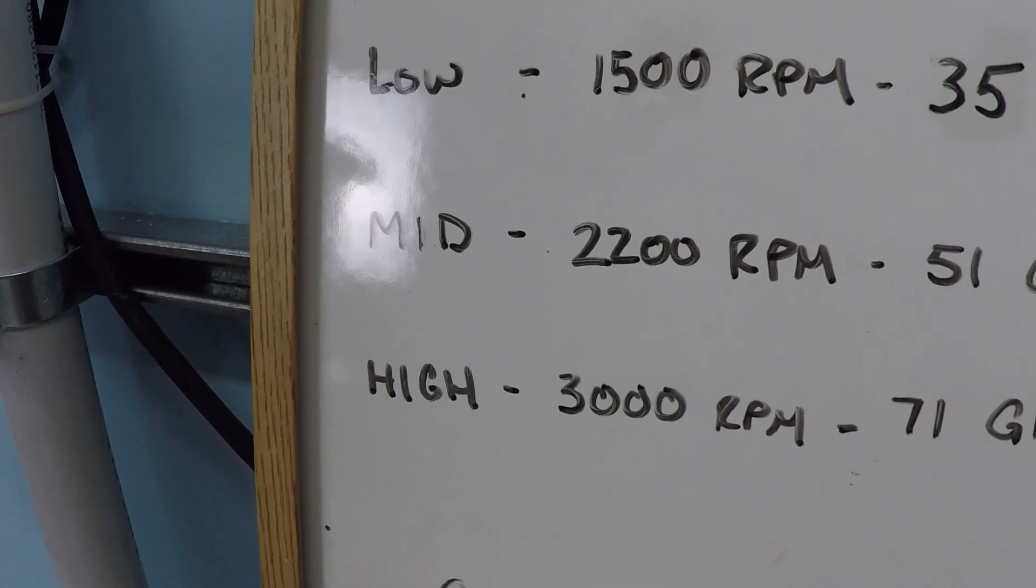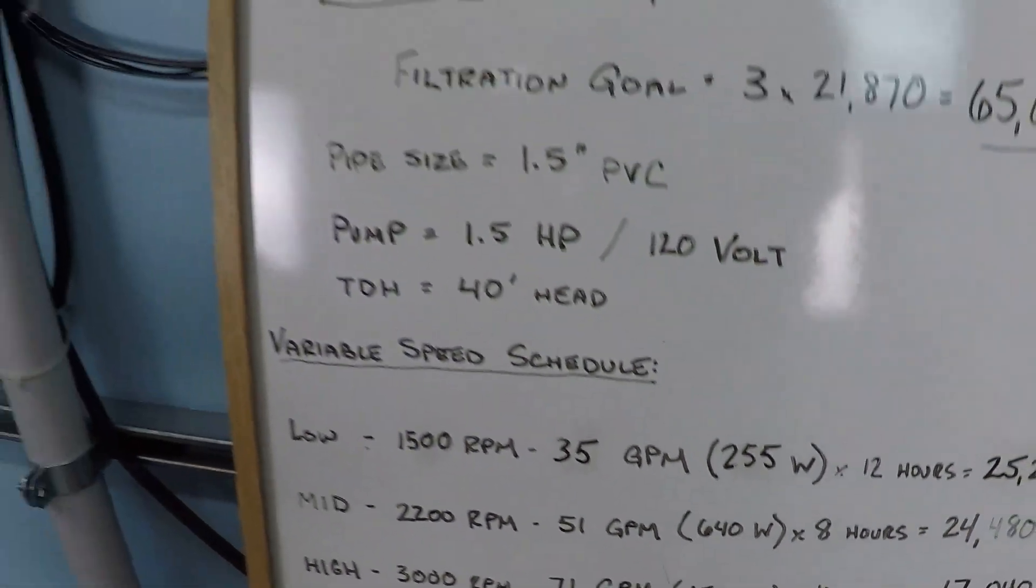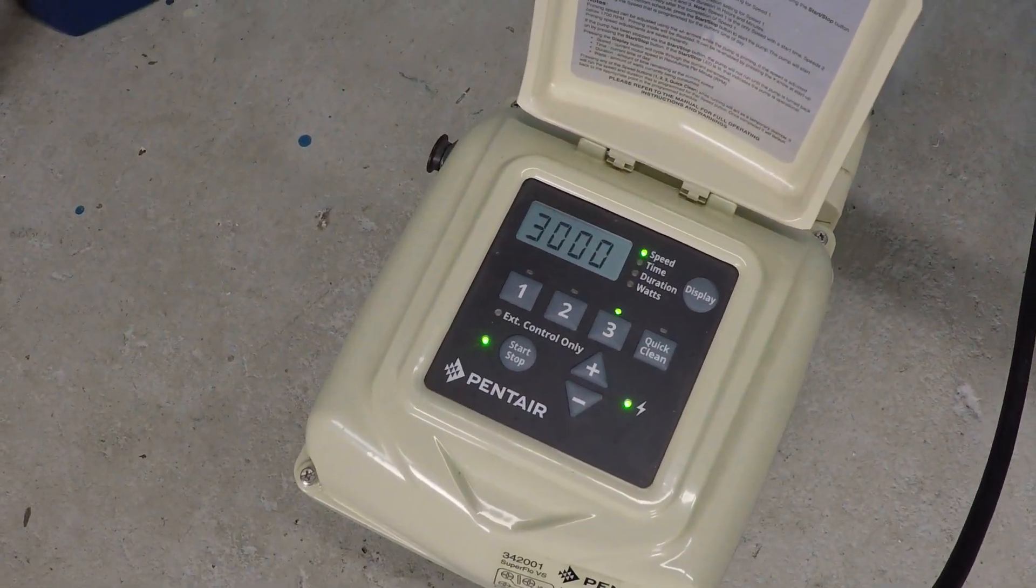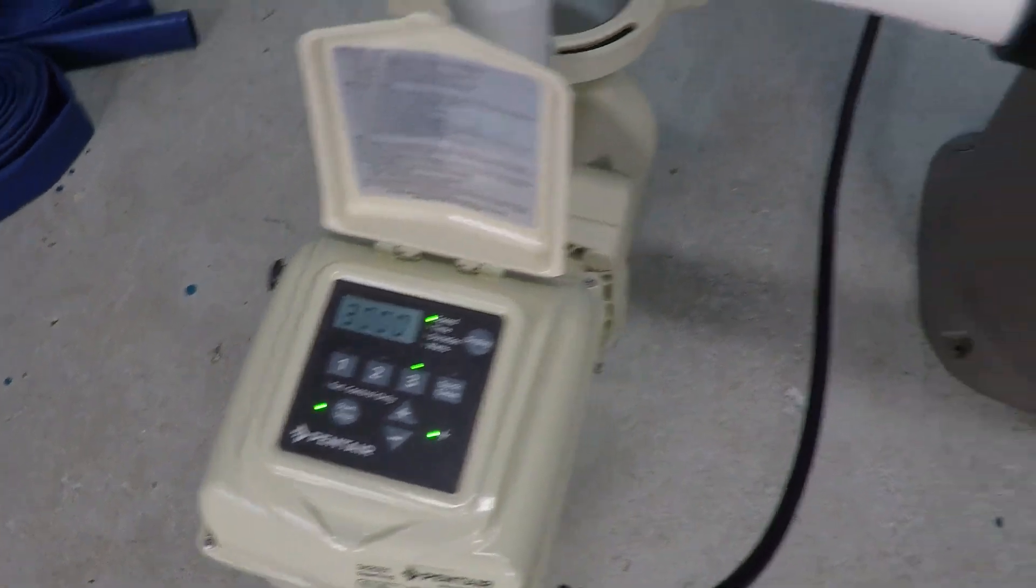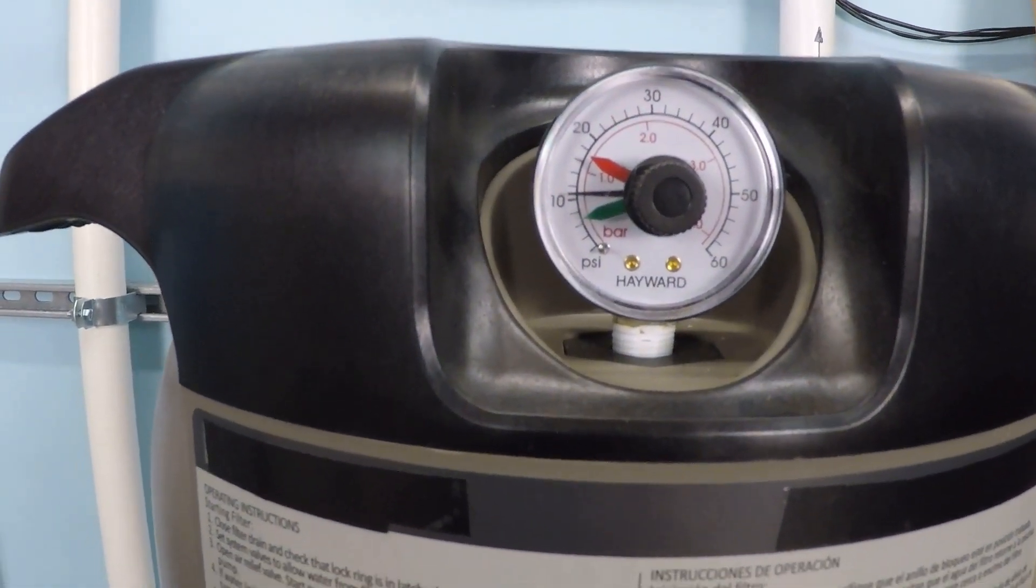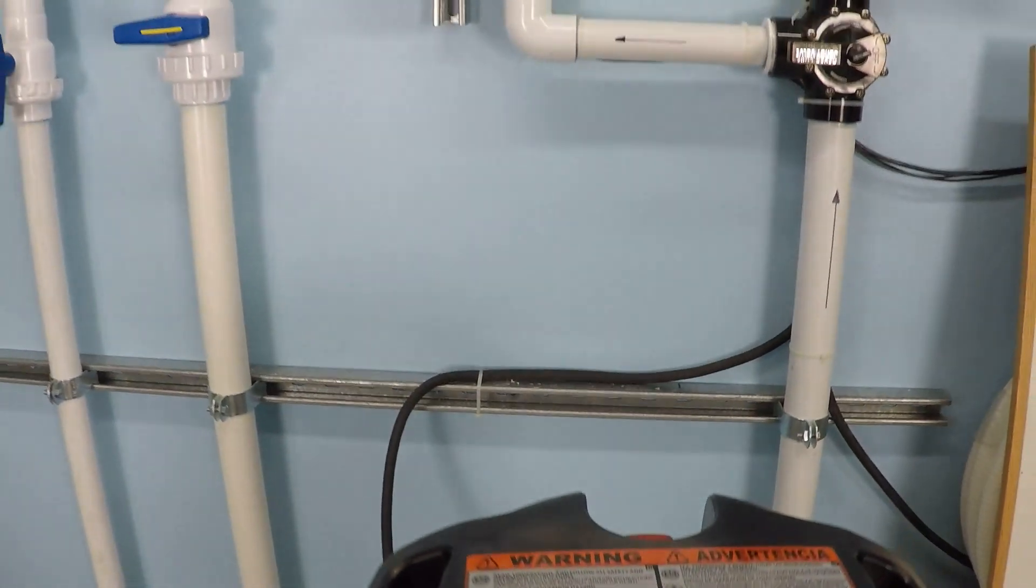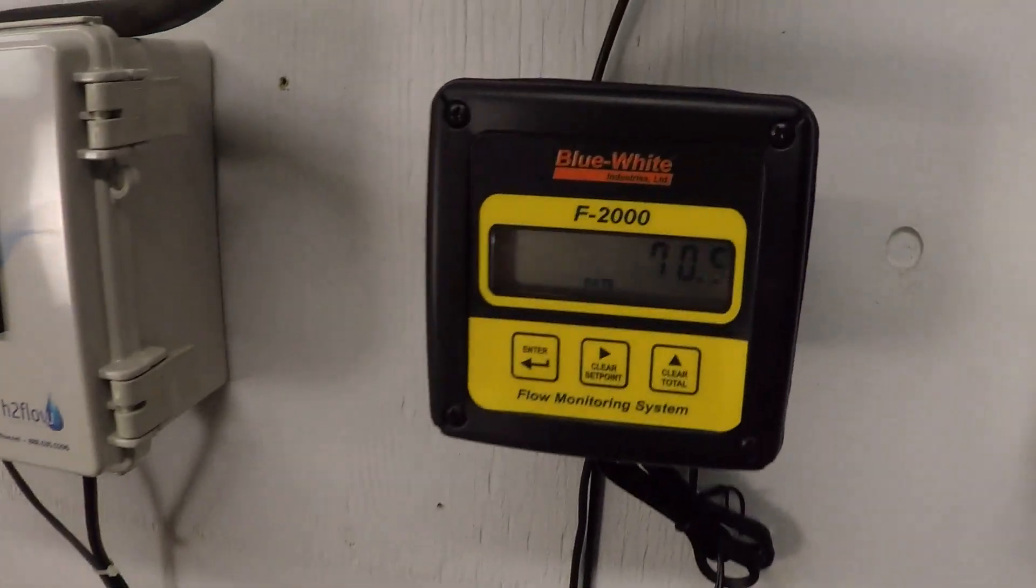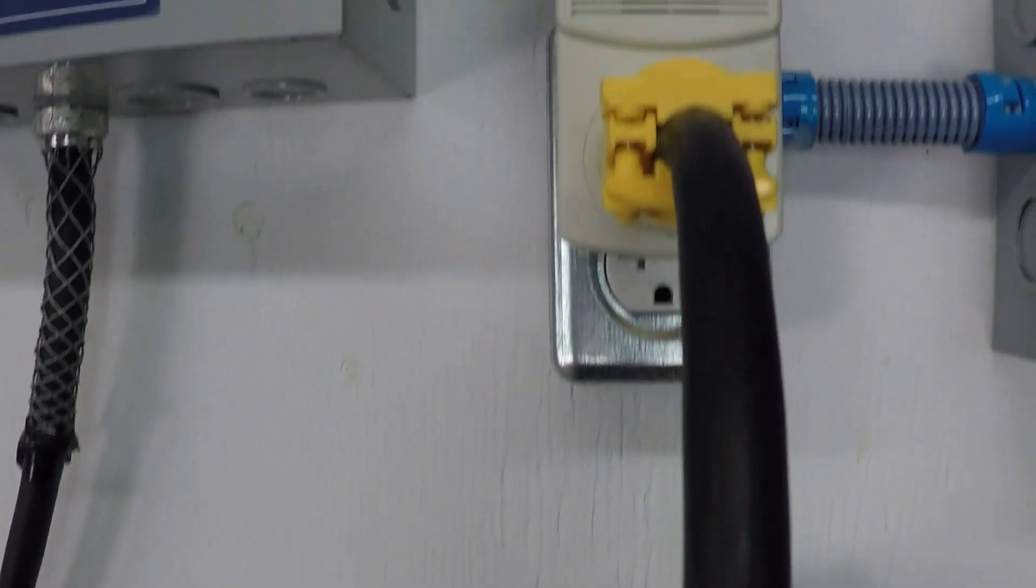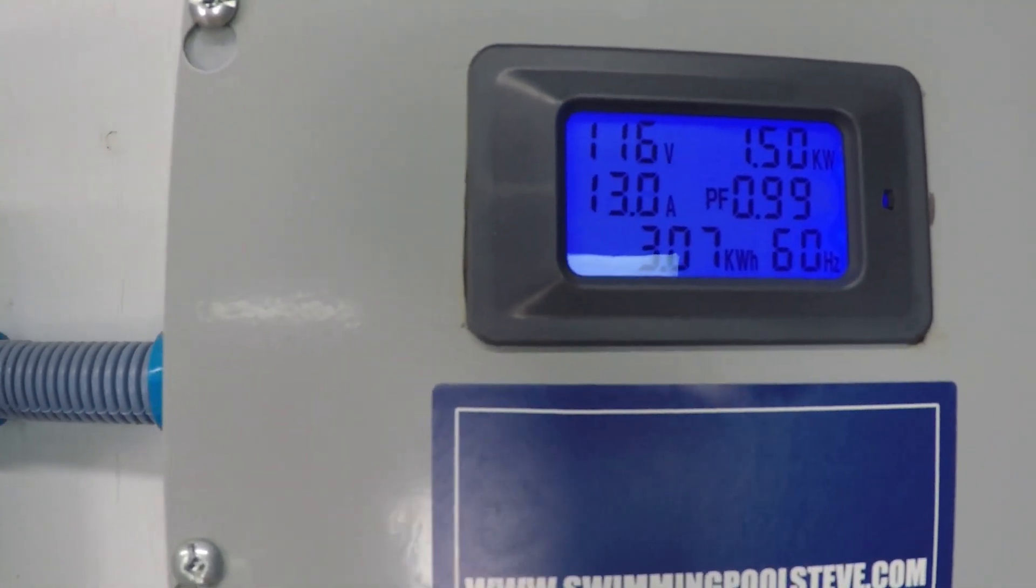Just over 10 psi, not 11, just over 10. We're getting 71 gallons per minute at 1500 watts - 1.5 kilowatts.